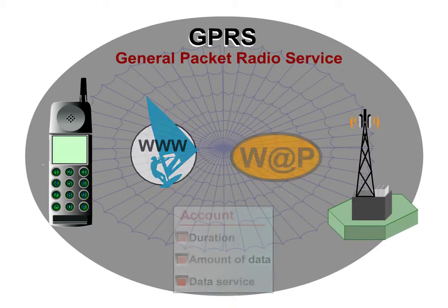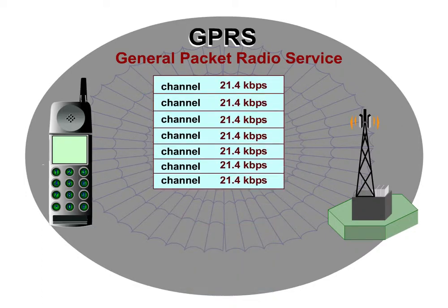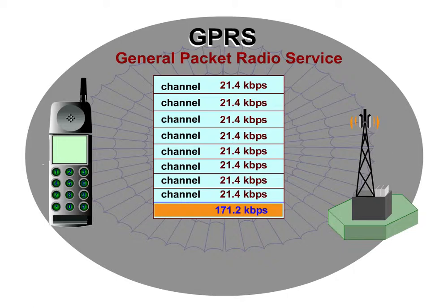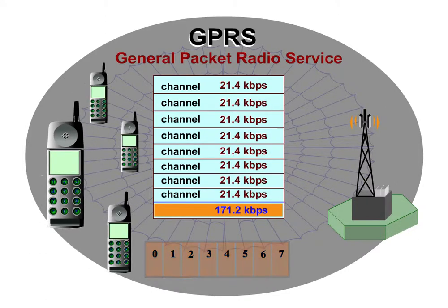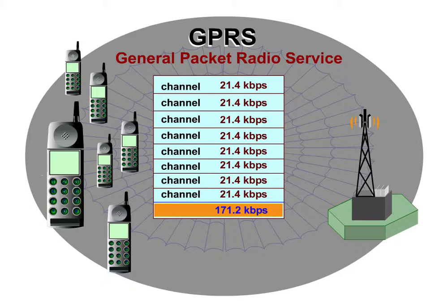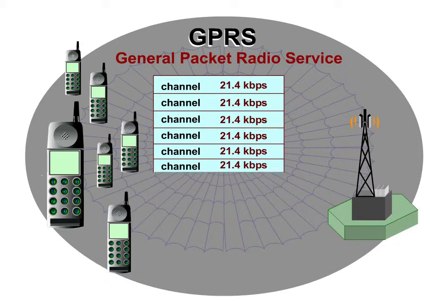By bundling up to 8 channels, a data rate of up to 171.2 kilobits per second can be achieved, with up to 8 subscribers per channel. The more subscribers transmit data within a cell, the more the data rate available to each individual user is reduced.